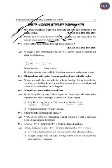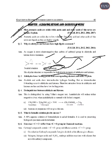Next: Why do aldehydes and ketones have high dipole moments? In the carbonyl group, oxygen is more electronegative than carbon. The carbonyl compound shows resonance, increasing polarity. Oxygen withdraws electrons from carbon, creating a partial positive charge on carbon and negative on oxygen, forming a dipole structure. This dipole structure is responsible for the high dipole moment of aldehydes and ketones.